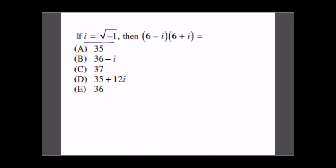If i = √-1 then (6 - i)(6 + i), this we have to find. Simply we multiply, so this is what we get: 6 × 6 = 36 - 6i + 6i - i². These two terms cancel out, 36 - i². i² we all know is -1, so this is 36 - (-1) is equal to 37. So C is the answer.